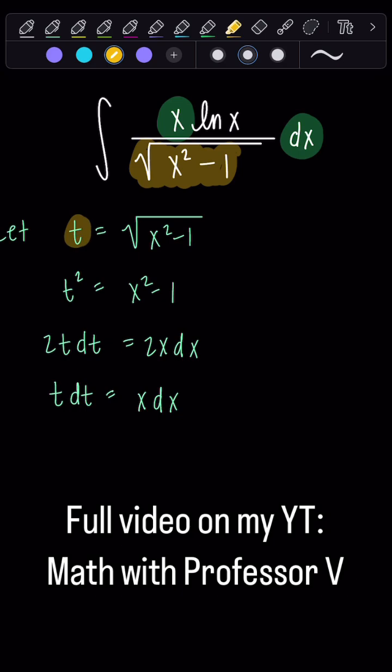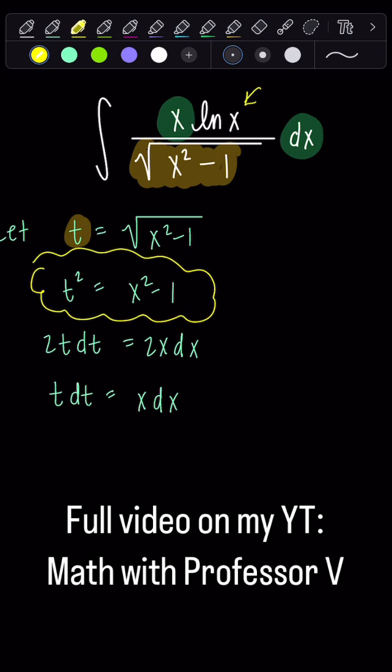So the only issue is that now I have ln of plain old x right here. So I need to solve for x in terms of t, and I'm going to do so using the fact that t squared equals x squared minus 1.